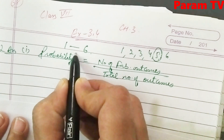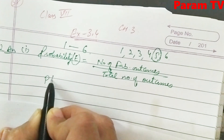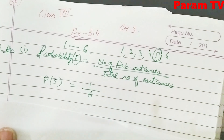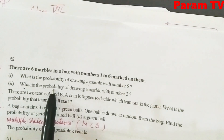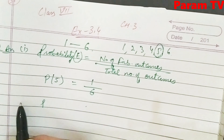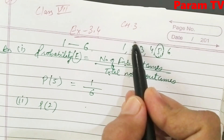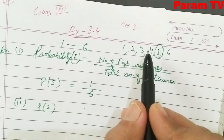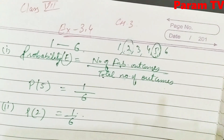The probability of getting a marble marked 5 is 1 by 6, since there is only one marble with 5 out of 6 total. Similarly, the probability of getting marble number 2 is also 1 by 6, as number 2 appears only once.